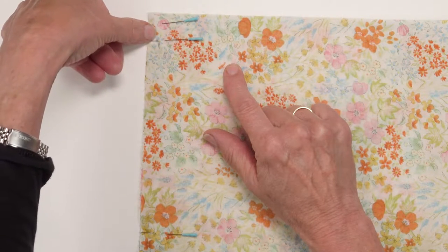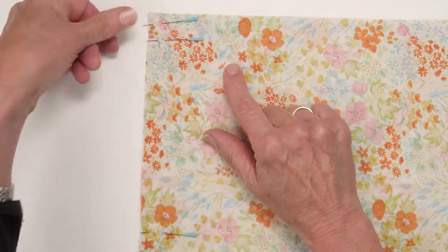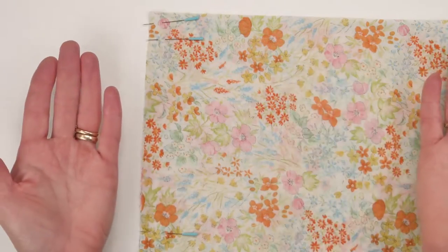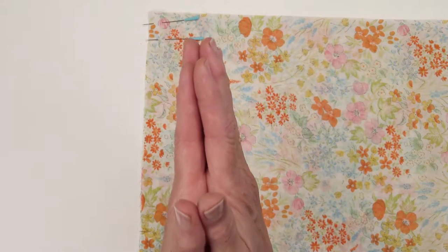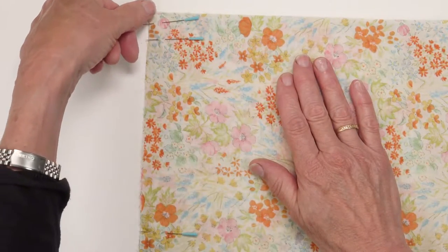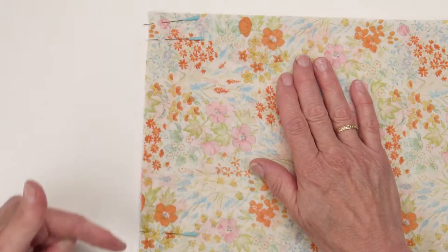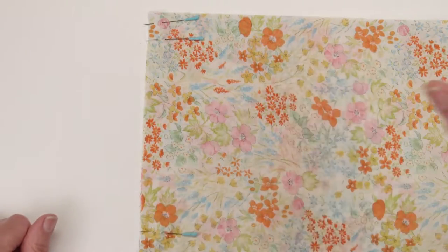Also take the other strip, place it right sides together and sew that long seam all the way top to bottom. I'll meet you back here.